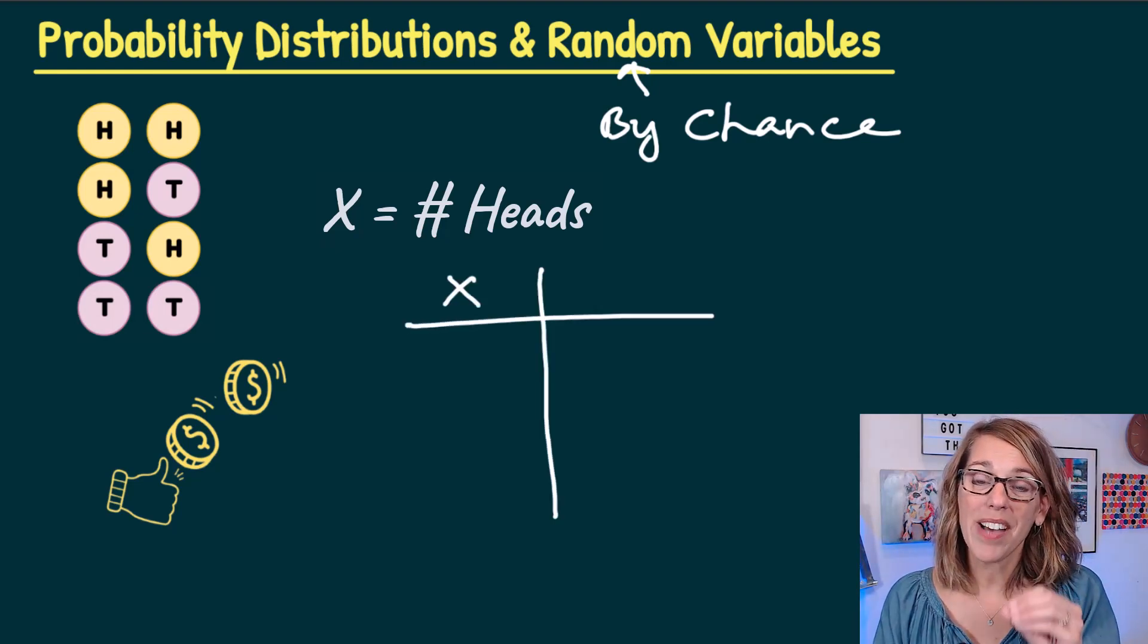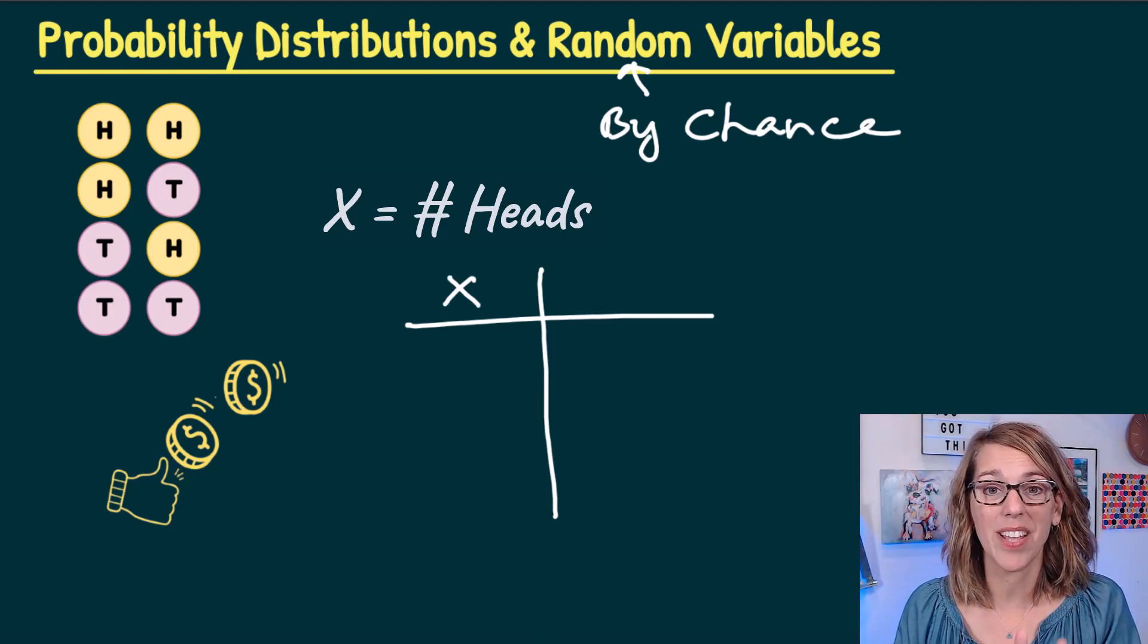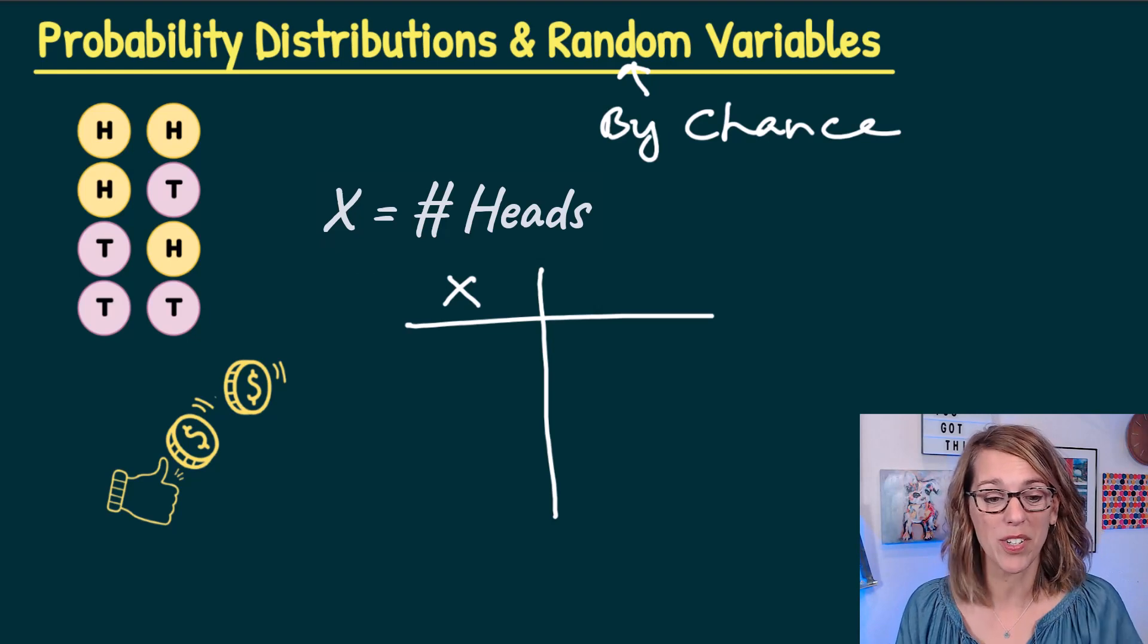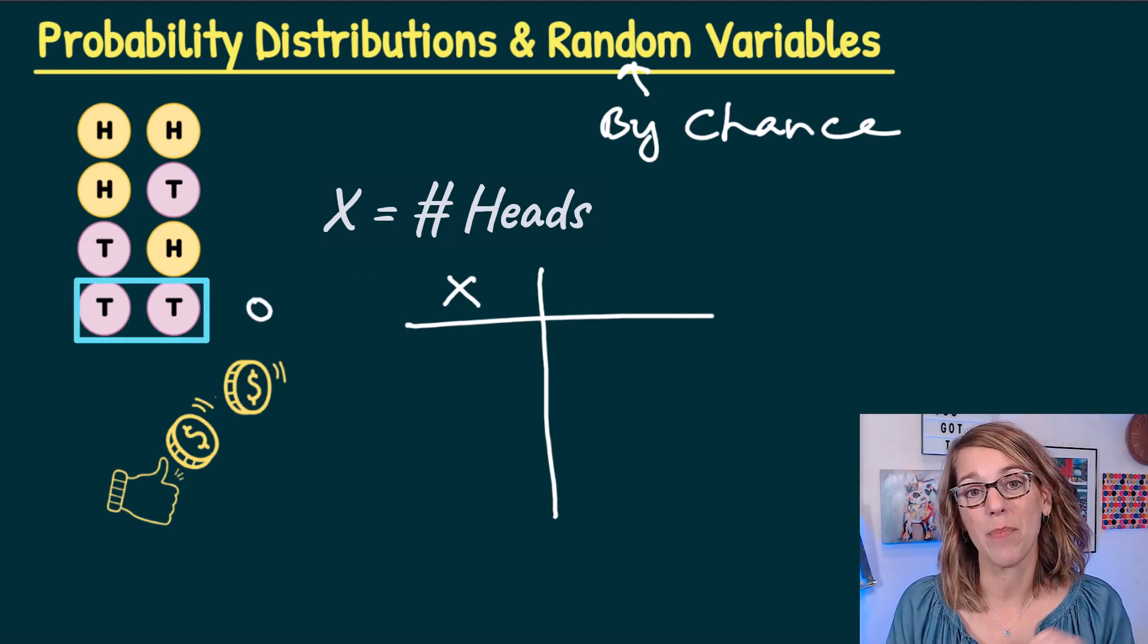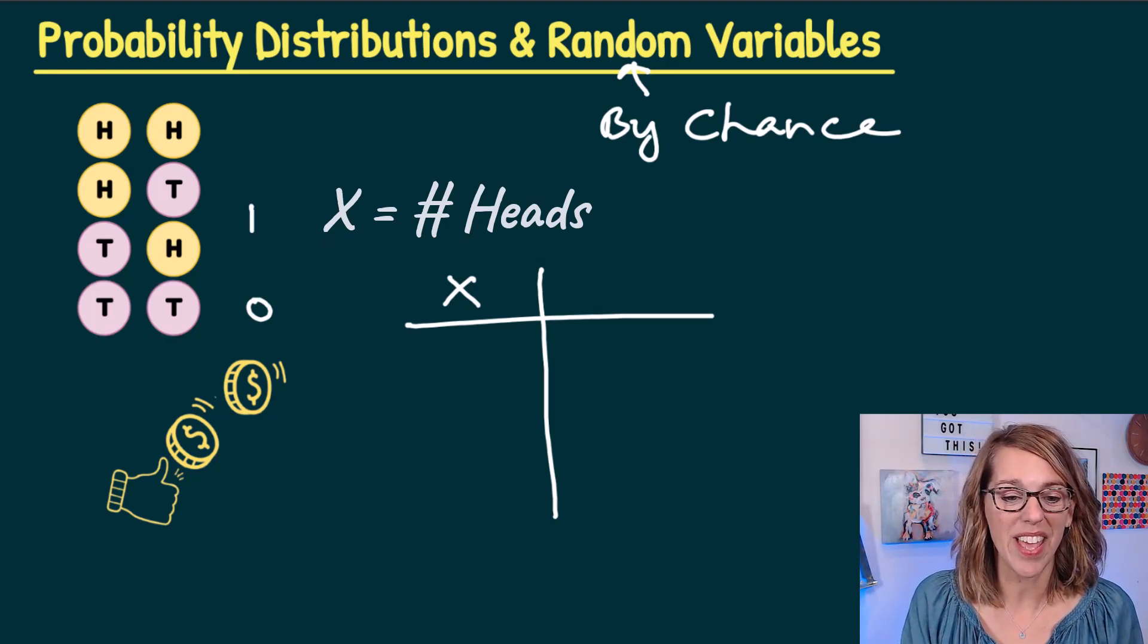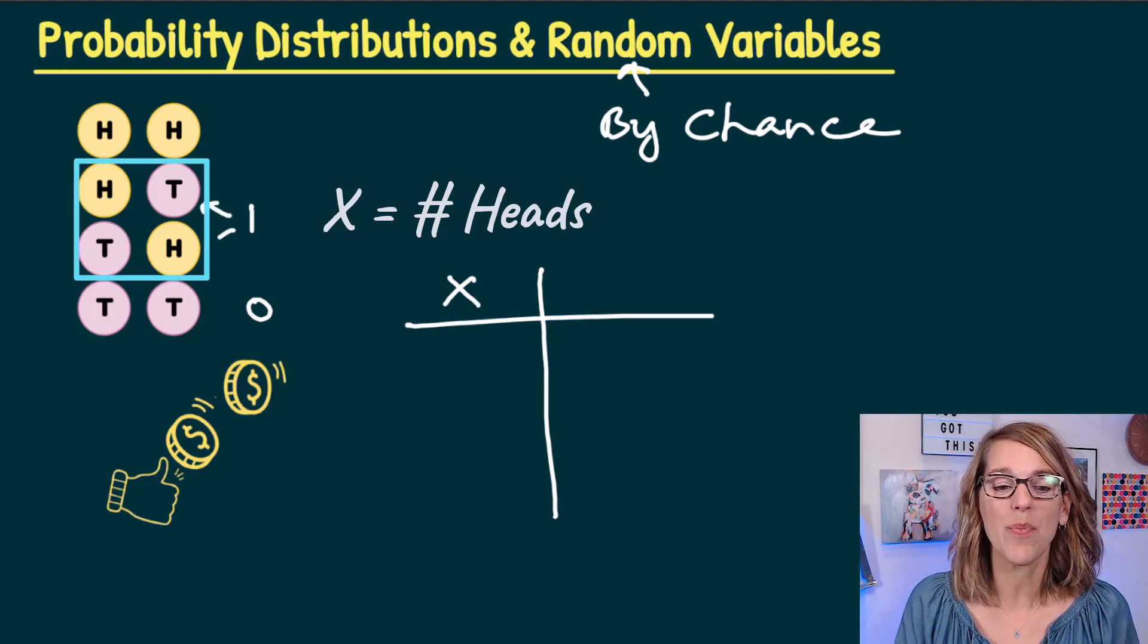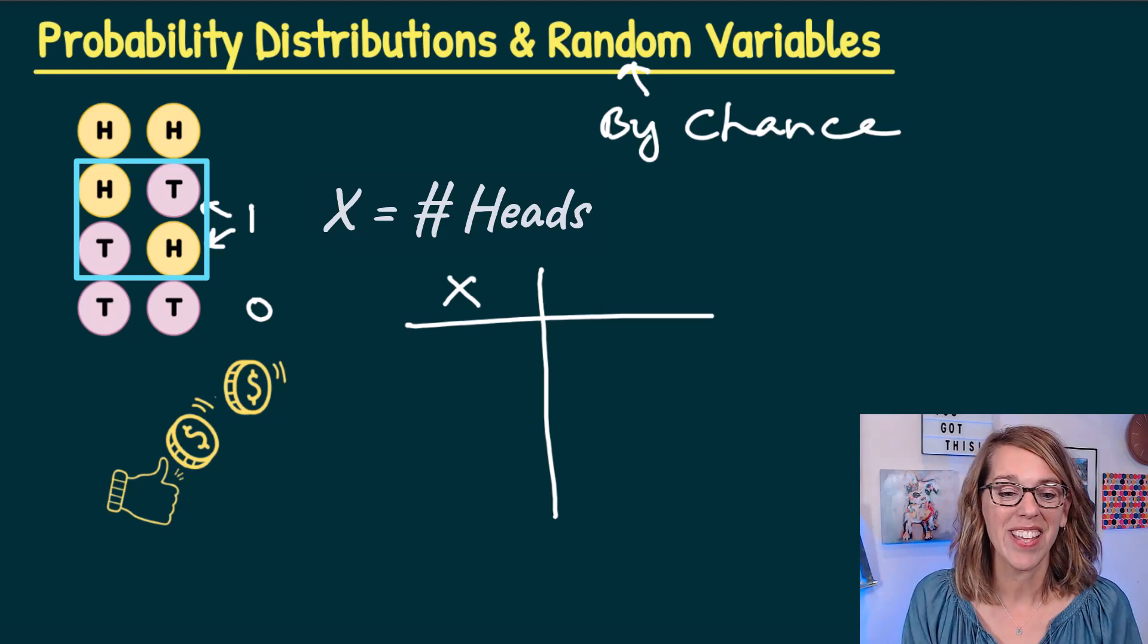Let's think through what the possible outcomes are for X. X represents the number of heads that we can get when we flip that coin twice. So the smallest number would be here at zero if I got both a tails and a tails. I could also end up with a single head, and that would be in either one of these, either heads and tails on the second or tails and heads on the second. The highest number that I could get would be two.